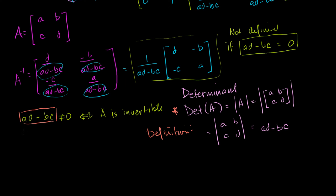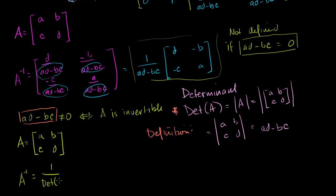So we can rewrite the inverse formula. For a matrix A equal to A, B, C, D, A inverse equals 1 over the determinant of A times the matrix D, minus B, minus C, A. A good way to memorize this: the A and D get swapped, and B and C just become negative. That's the general formula for the inverse of a 2 by 2 matrix using the determinant.